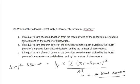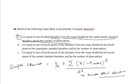So in this case it is equal to the sum of the cube deviation from the mean divided by the cube sample standard deviation and by the number of observations. So option A is the correct option.